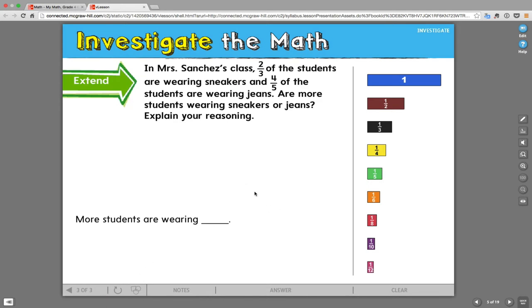In Mrs. Sanchez's class, two-thirds of the students were wearing sneakers and four-fifths of the students are wearing jeans. Are more students wearing sneakers or jeans? Explain your reasoning. Well, what we need to do is find out which of these fractions is bigger. We can do that by dragging out the tiles, which works and is a great way to do it, but it is a little bit time-consuming. We can also do this mathematically.